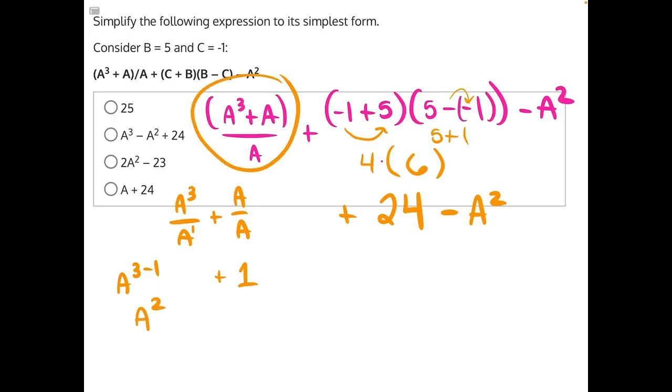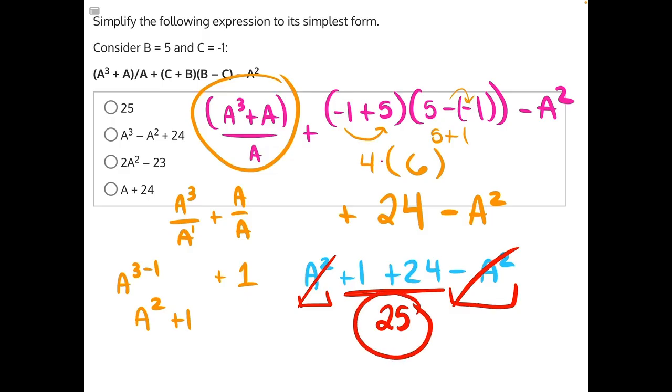So, this entire fraction simplified down is a squared plus 1. So, now in a brand new color, we'll go write all of this down here. We have a squared plus 1 plus 24 minus a squared. Now, the final step here is going to be combining our like terms. So, we have 1 plus 24 will give us 25. And then, a squared minus a squared is just going to give us 0. These are going to cancel out, leaving us with just the number 25, making answer choice A our correct answer.